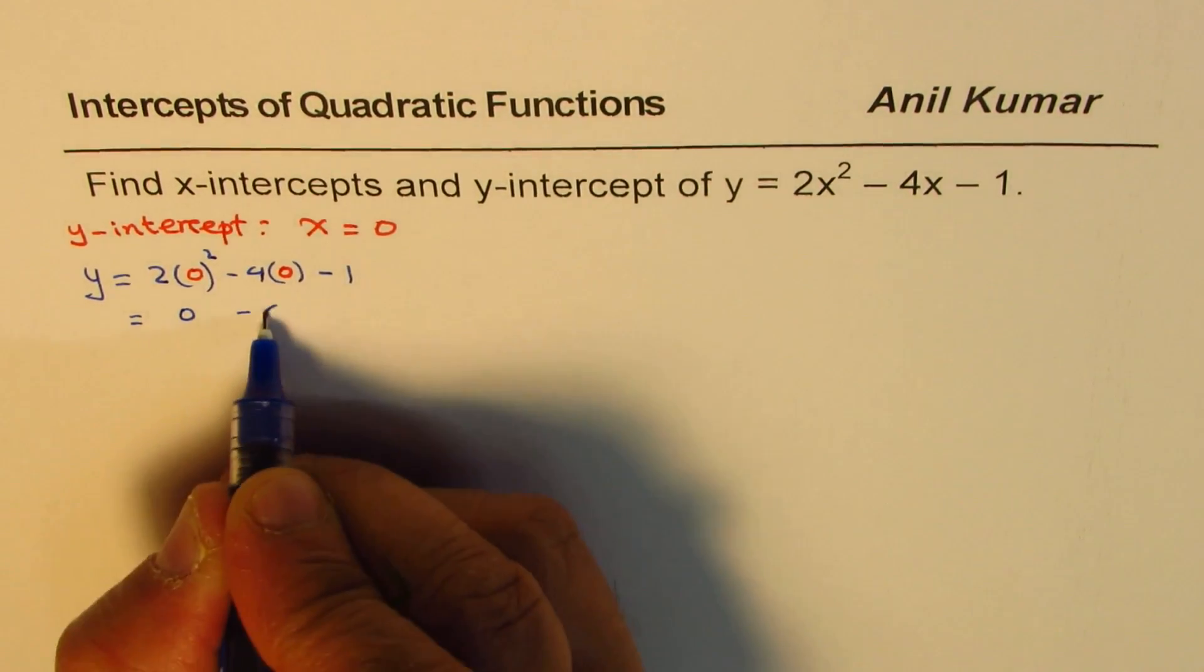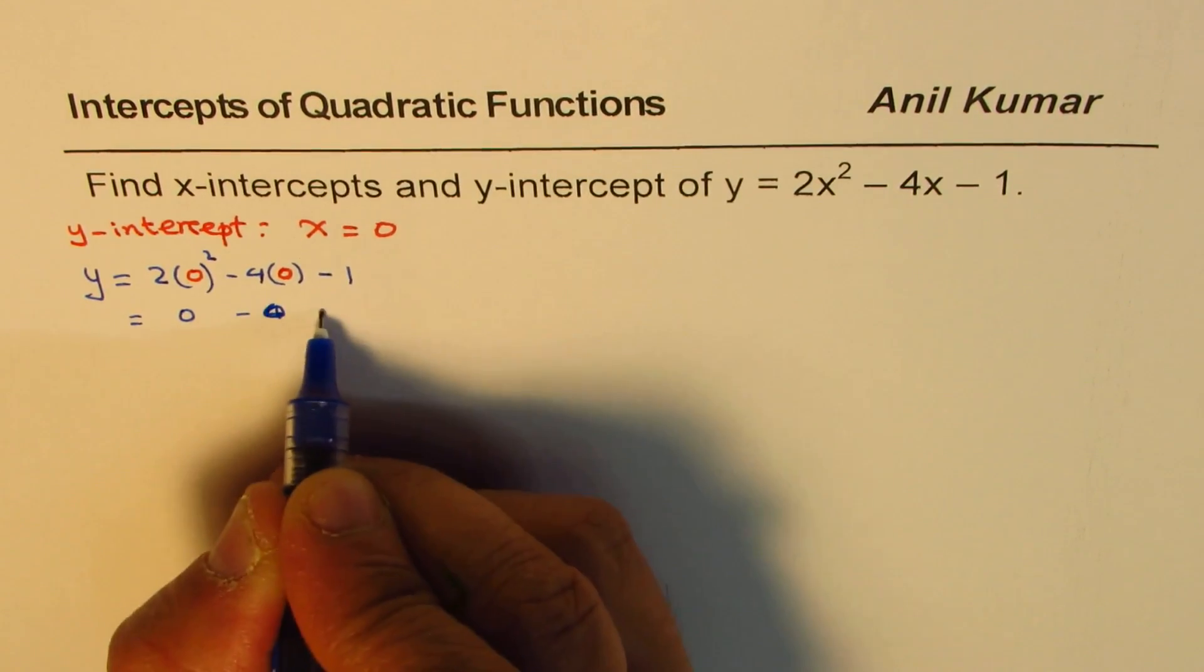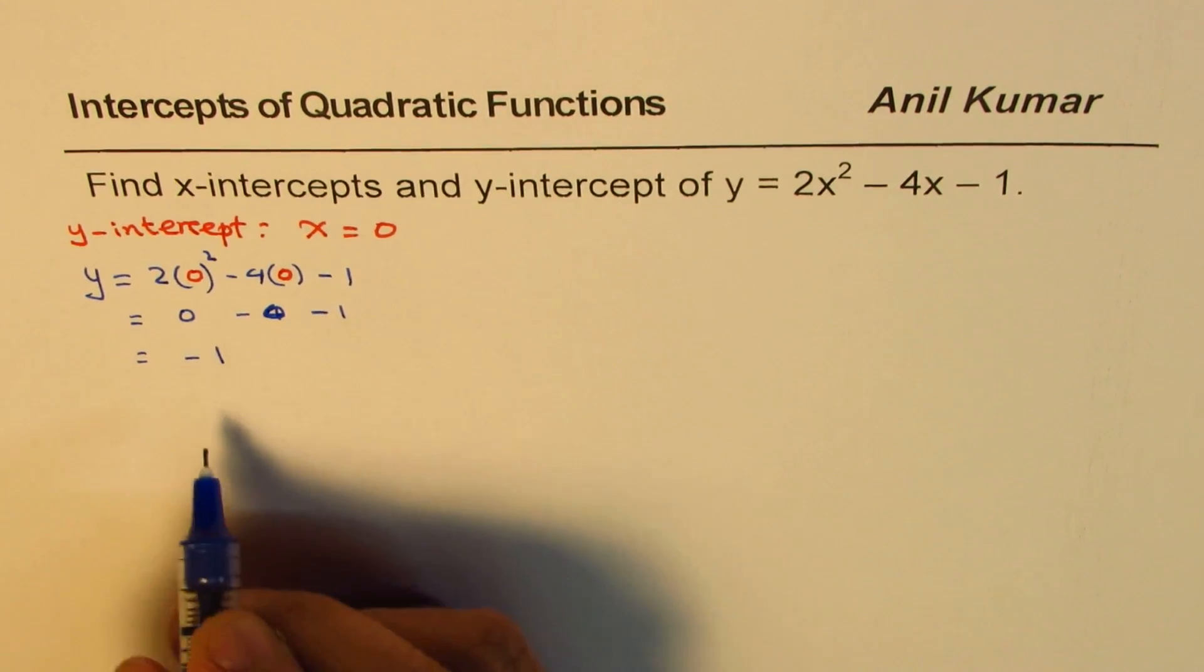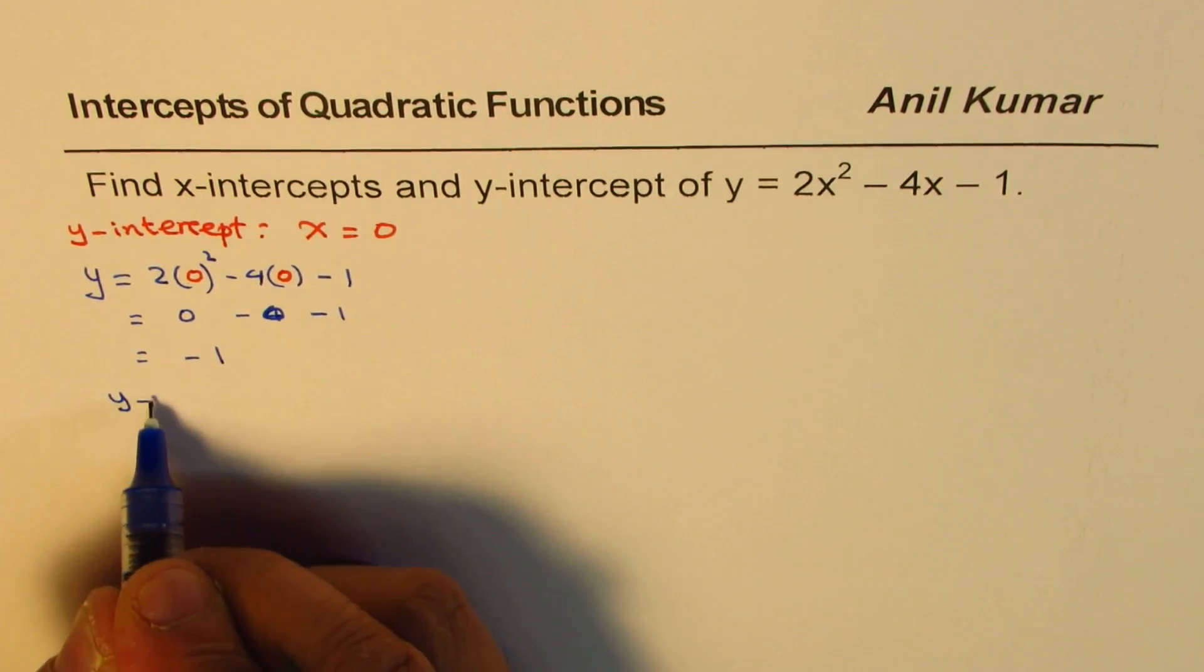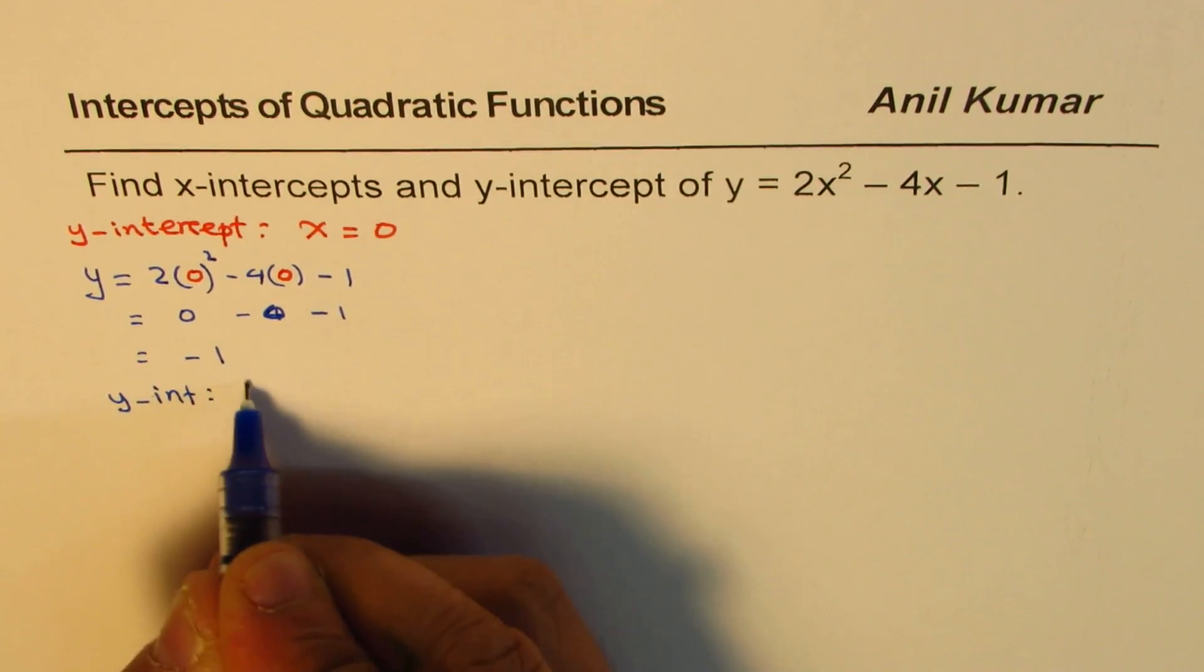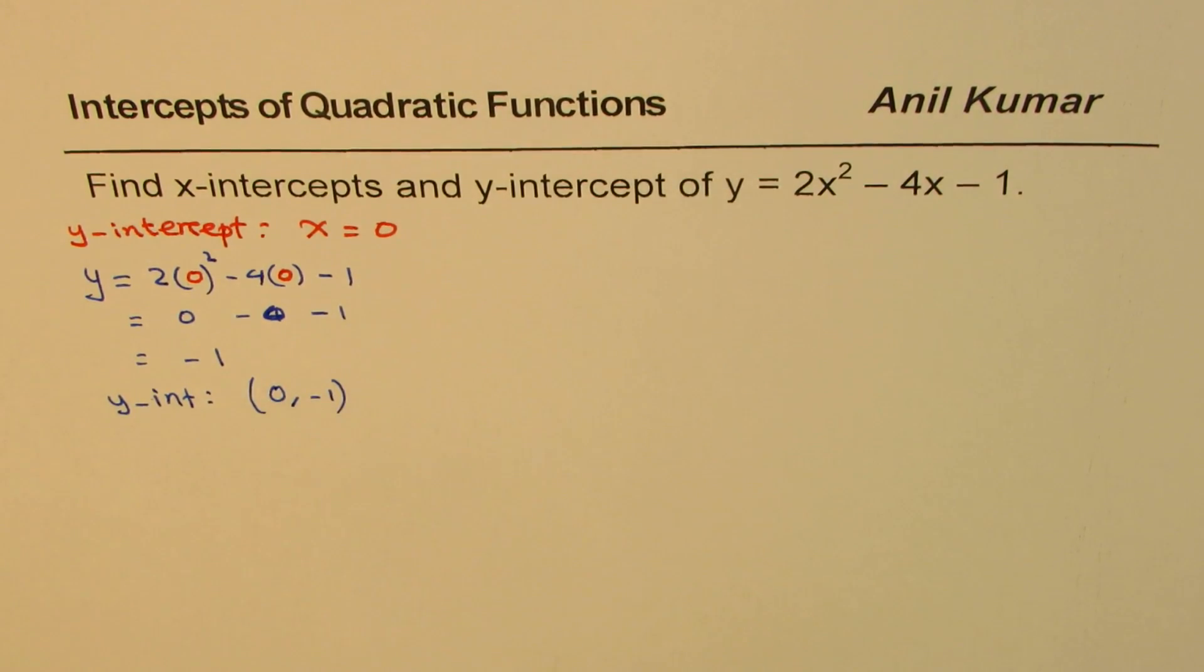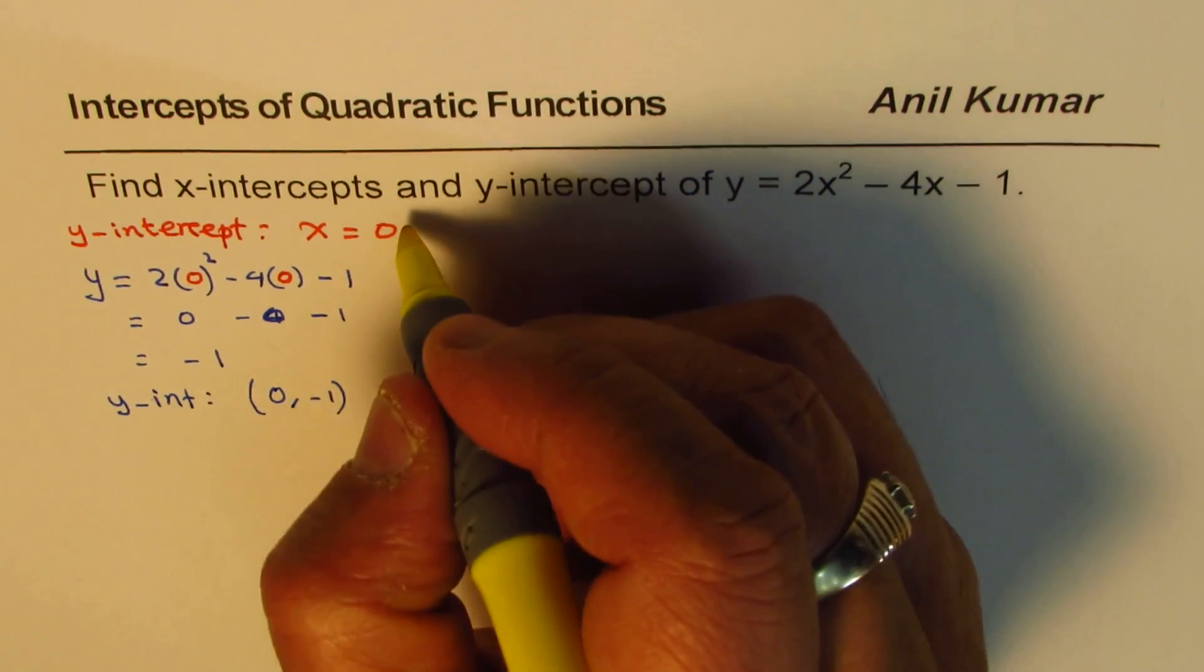So what do you get here? You get 0 minus 0 minus 1 which is equal to minus 1 and therefore the y-intercept is, let me write in short form, as 0 minus 1 since we had substitute x equals 0. So that is the way to find y-intercept.